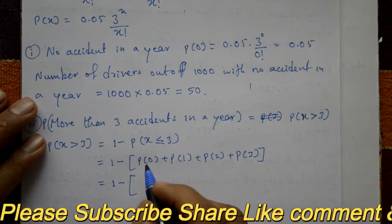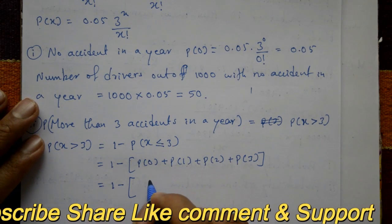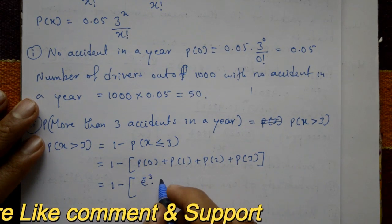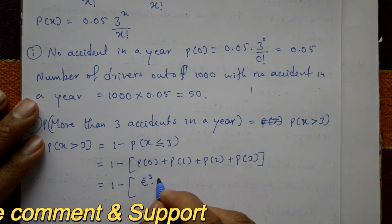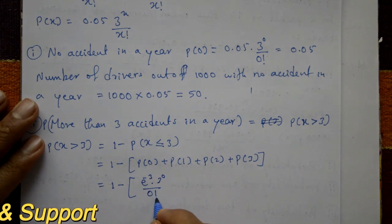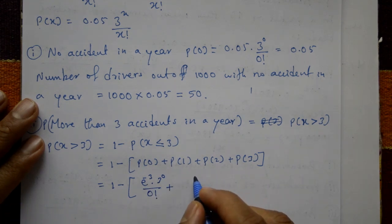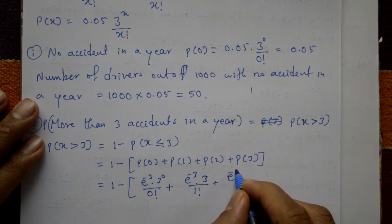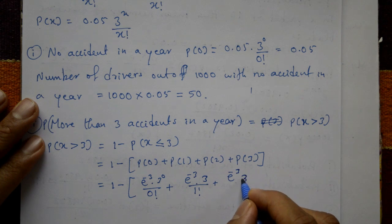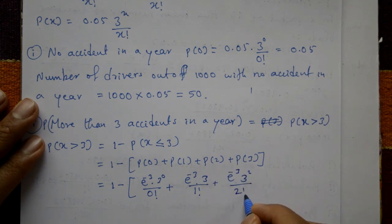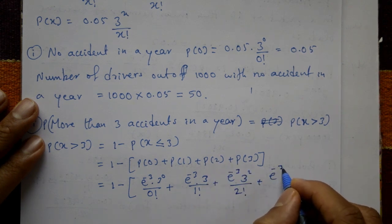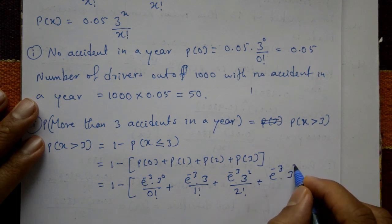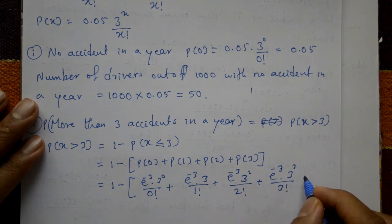For x equals 0: e raised to minus 3 multiplied by 3 raised to 0, divided by 0 factorial. Plus for x equals 1: e raised to minus 3 multiplied by 3, divided by 1 factorial. Plus for x equals 2: e raised to minus 3 multiplied by 3 squared, divided by 2 factorial. Plus for x equals 3: e raised to minus 3 multiplied by 3 cubed, divided by 3 factorial.